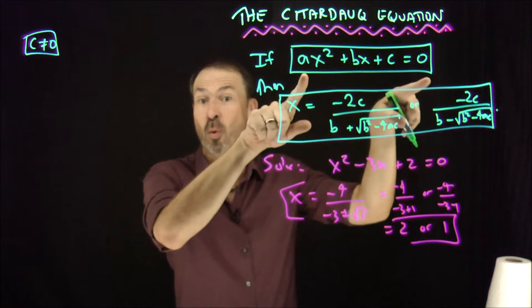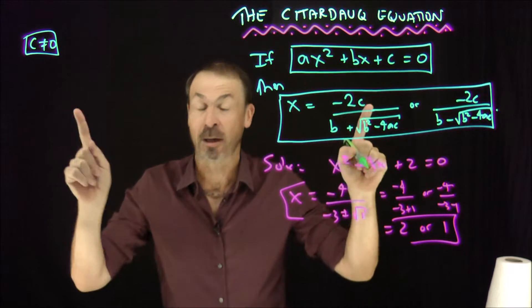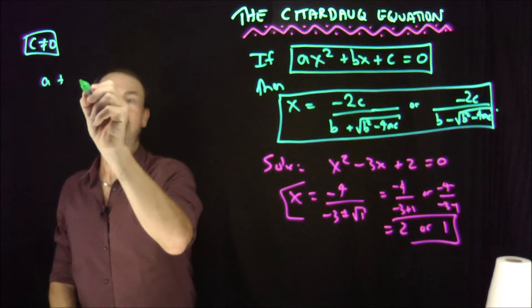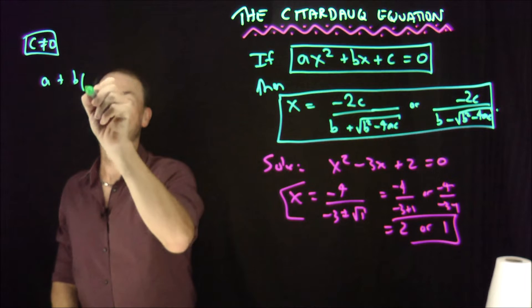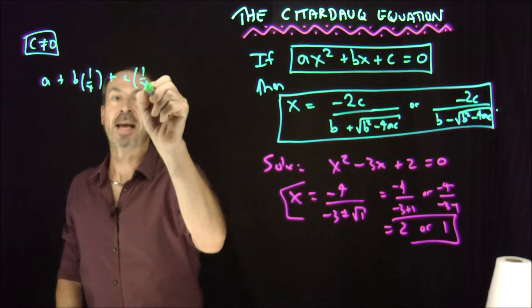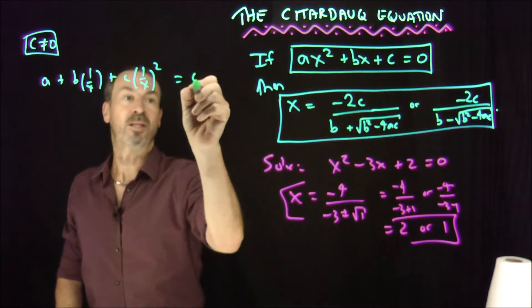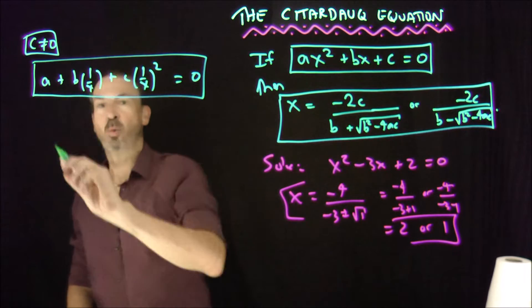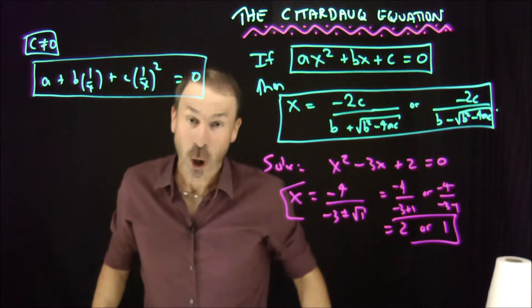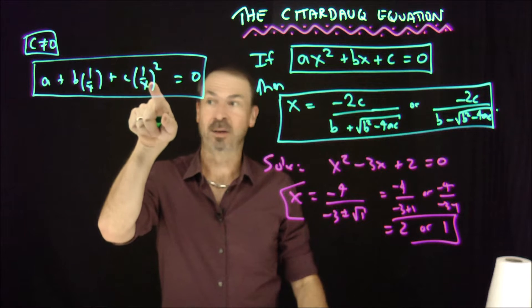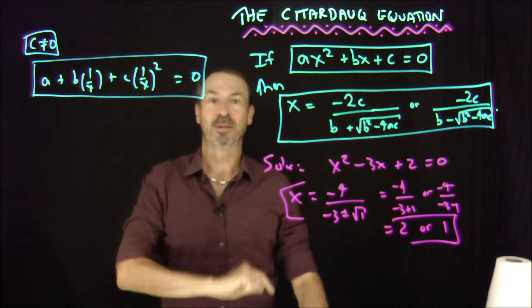So assuming this, I know I've got non-zero solutions, so let's work with that. Let's divide this equation through by x. In fact, let's divide it by x², because I know x is not going to be zero. So divide through by x², and I get the equation a + b(1/x) + c(1/x)² = 0.